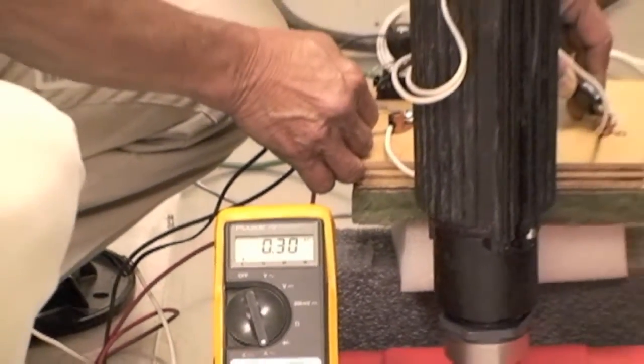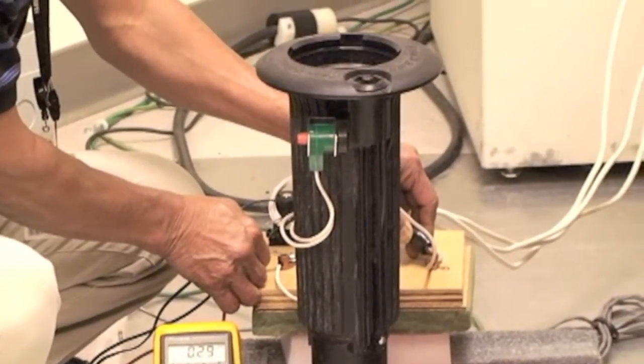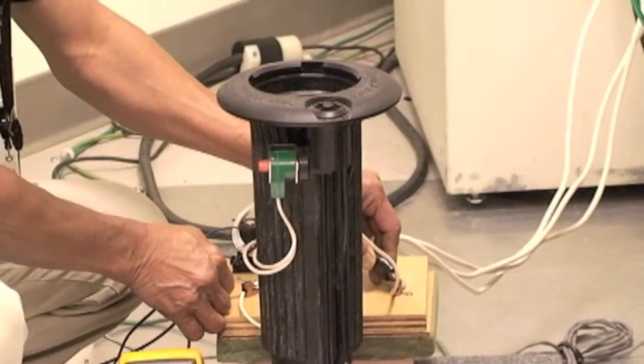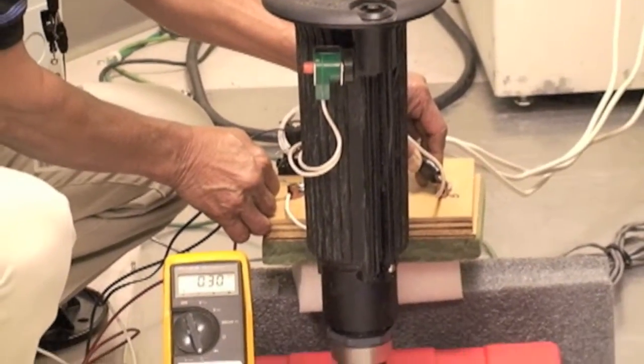Next we're going to hit the solenoid with a 20,000 volt surge and see if it can withstand that type of energy.